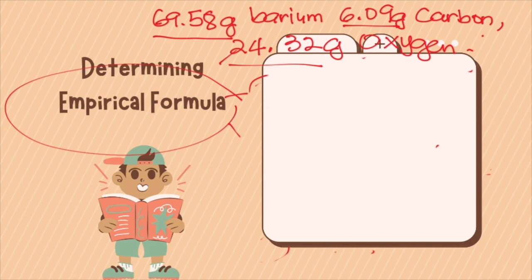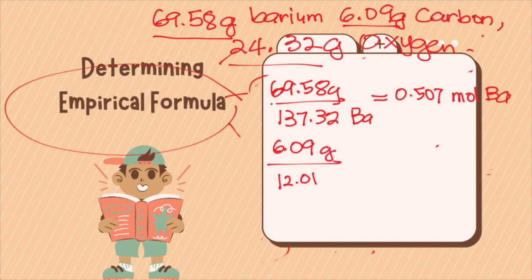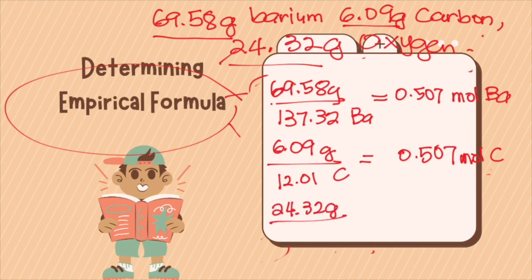Next, we convert all grams to moles. Barium: 69.58 grams divided by the molar mass of 137.32, giving 0.507 moles. Carbon: 6.09 grams divided by 12.01, giving 0.507 moles. Oxygen: 24.32 grams divided by 15.999, giving 1.520 moles.